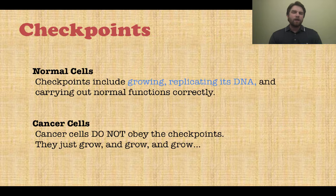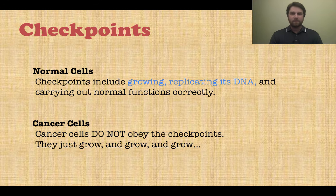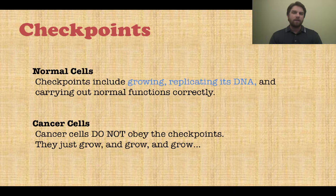Now we talk about checkpoints. The cell cycle has interphase with G1, S, G2, and M phase. Normal cells go through checkpoints in each phase where they grow, replicate their DNA, and carry out normal functions. Cancer cells, however, don't obey those checkpoints — they go through any portion of the cell cycle whenever and however they want, growing continuously with no regard for the normal starting and stopping points.